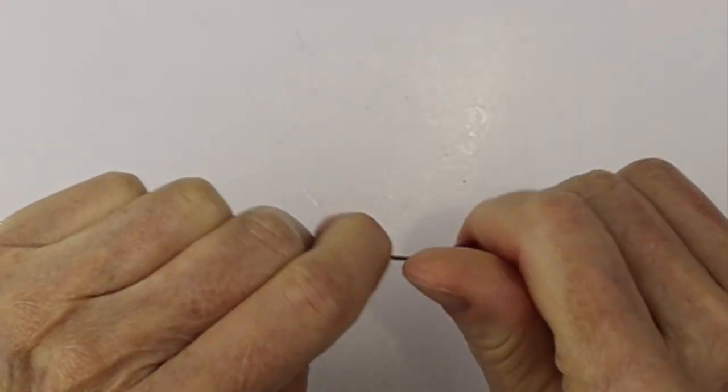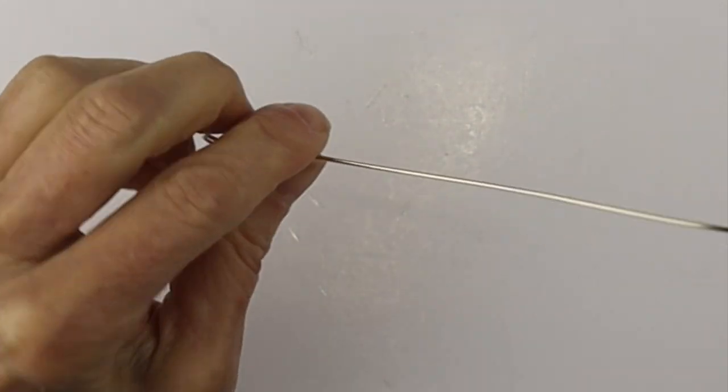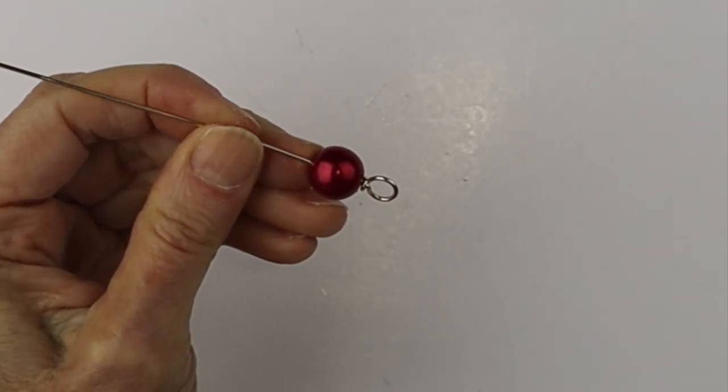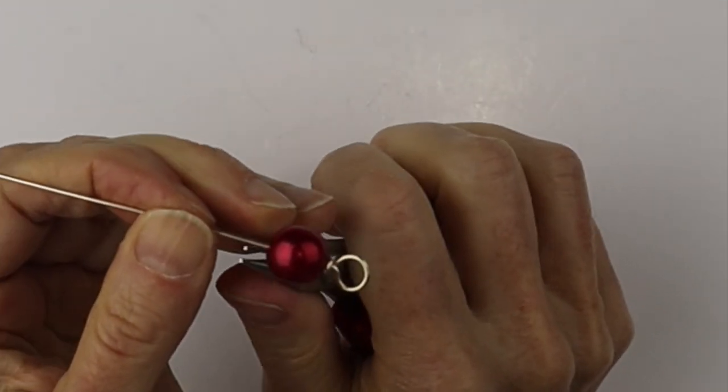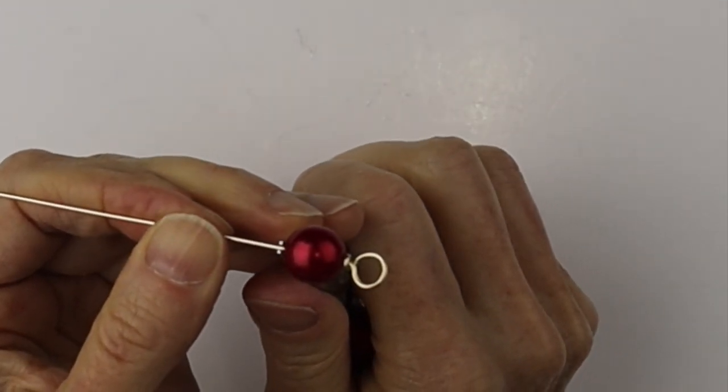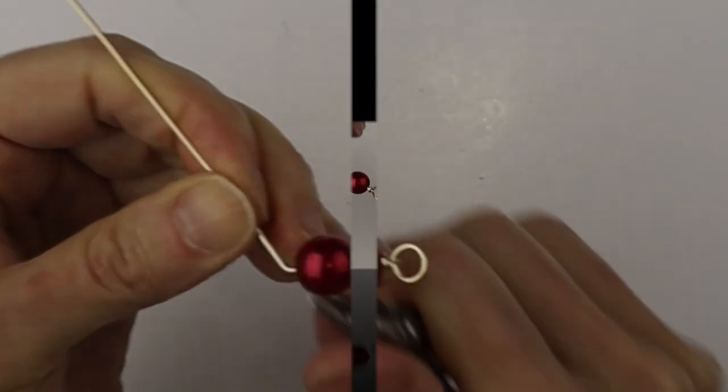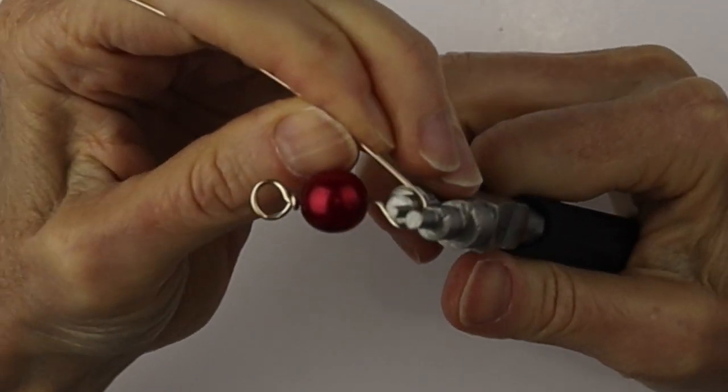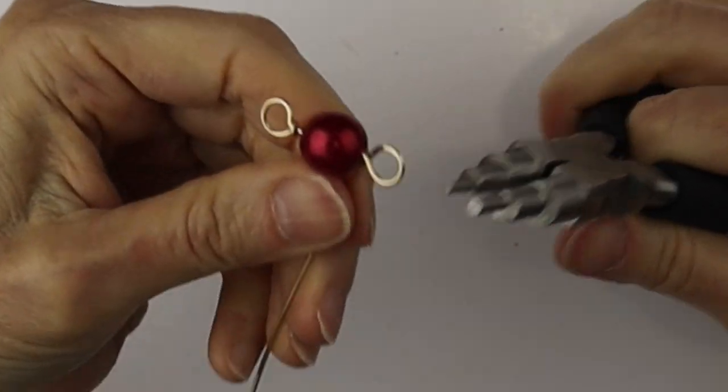Then we're going to put on a bead. This one's about 12 millimeters. You can use any size bead you want. I've done bracelets where I attach a bunch of these spiral beads together. I'll link up some other tutorials in the description below. Bend it out at an angle, then the same size loop on the other side.